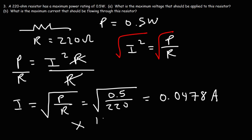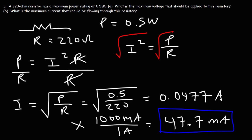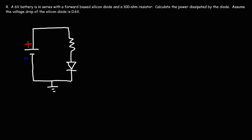Multiplying by 1,000 — since there are 1,000 milliamps per amp — this is approximately 47.7 milliamps. That is the maximum current that should be flowing through that resistor. So now you know how to design a circuit if you know the maximum power rating of a resistor and its resistance value — you can determine the maximum safe voltage and current.